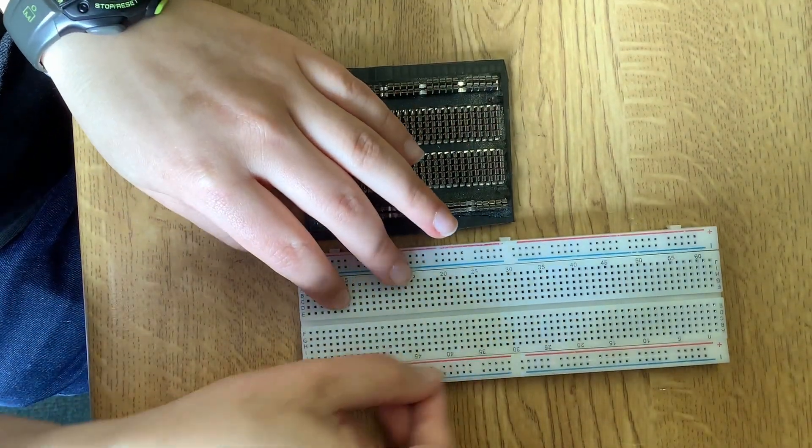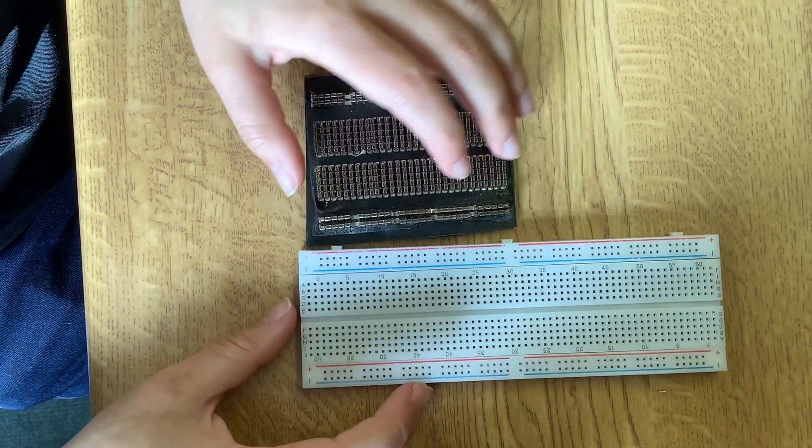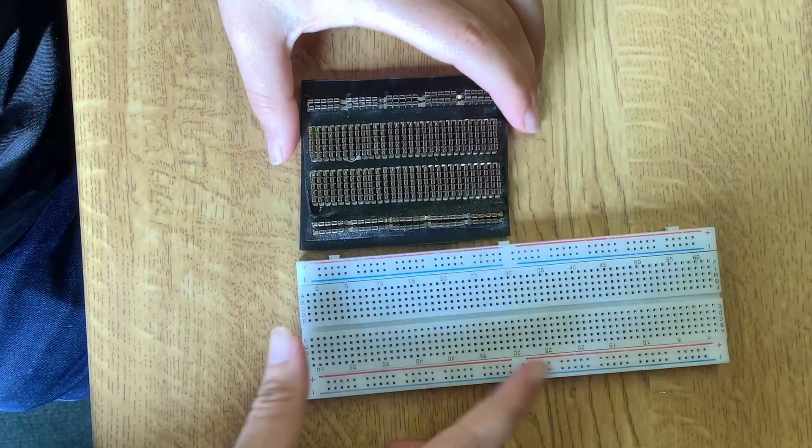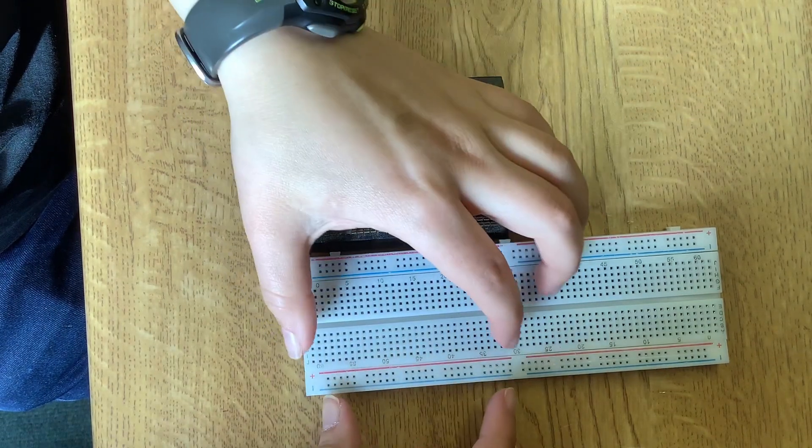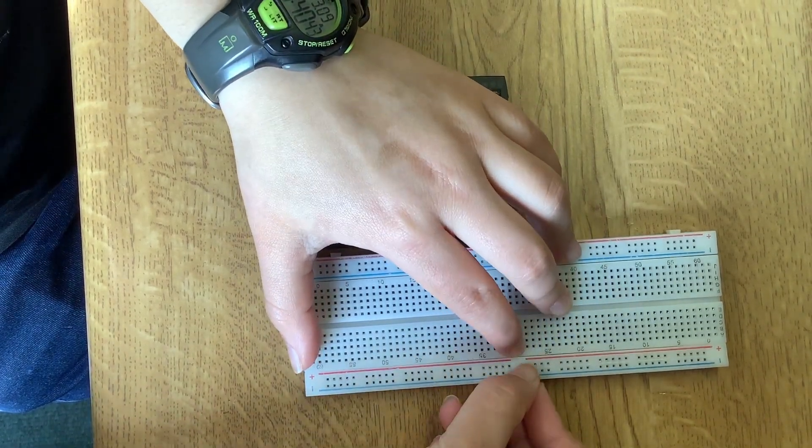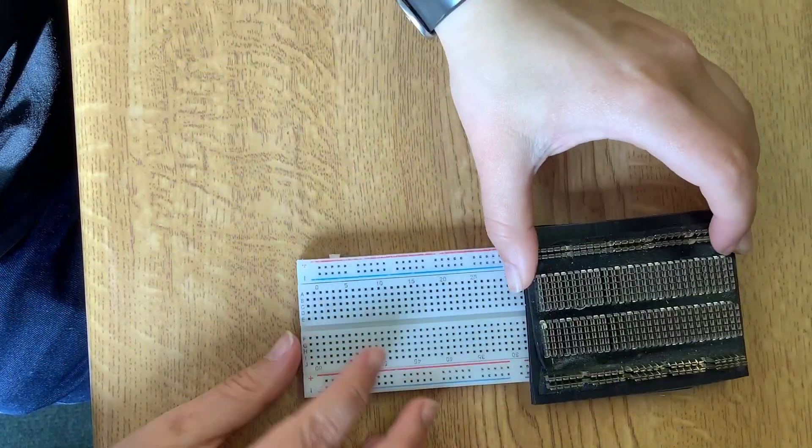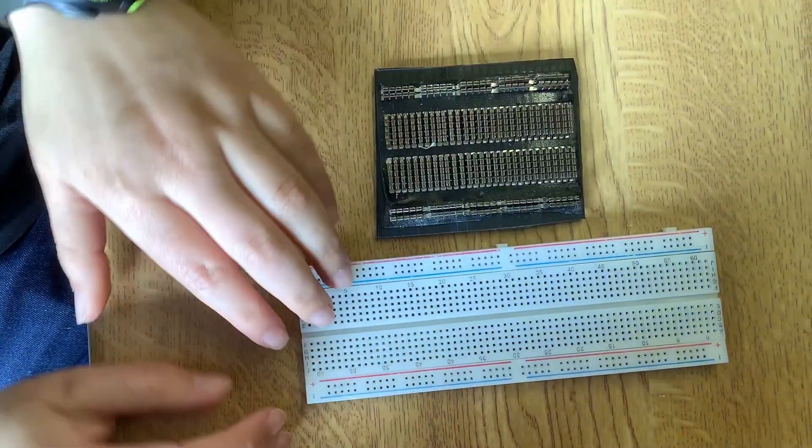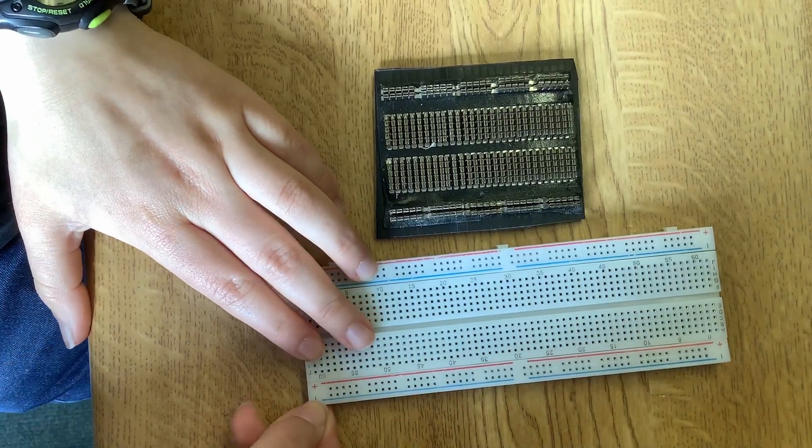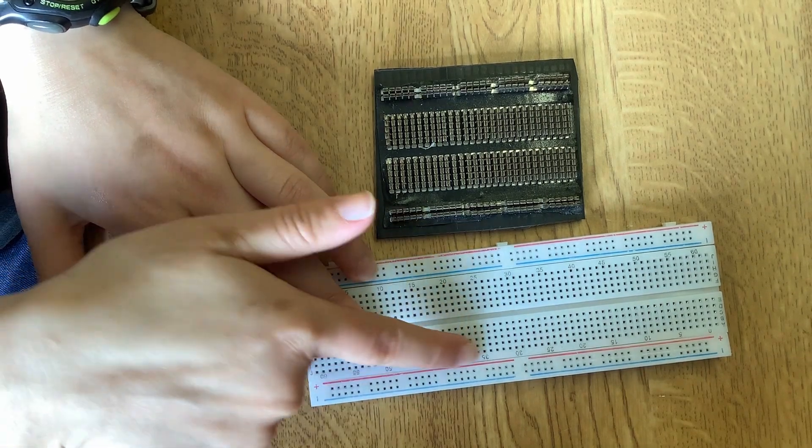The ones on the outside are called the buses and they're connected horizontally. This breadboard here it's a long one and the lines here with colors means that this connection comes until here, so it's like having two of these. By convention this blue line is used for ground and this red one is used for voltage.